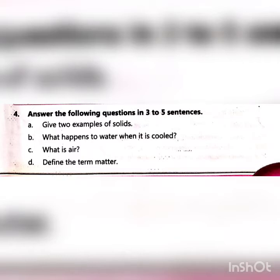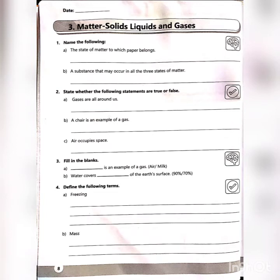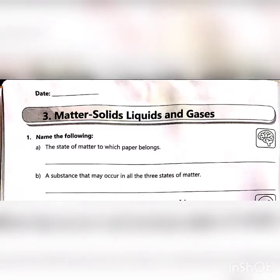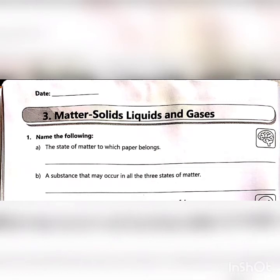You will do exercise 4 in your notebook. Now let's move on to the workbook. Turn to page 8 from your environmental workbook, chapter 3: matter, solids, liquids, and gases. Now, name the following. Question number 1. A. The state of matter to which paper belongs. We have three states of matter — in which state does paper belong? Yes, the answer is solid. B. A substance that may occur in all three states of matter. Yes, the answer is water.